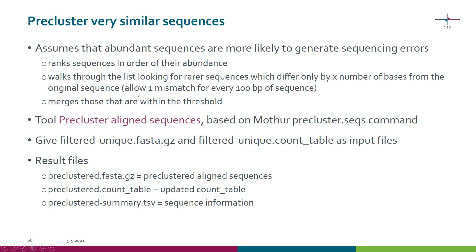The recommendation is to allow one mismatch for every 100 bases of sequence. So when we find sequences which differ only this much, we merge them to the original one. The tool in Chipster is called 'pre-cluster aligned sequences' and it's based on the Mothur pre.cluster command.